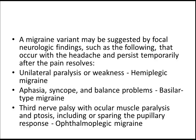Migraine variants may be suggested by focal neurological findings that occur with the headache and persist temporarily after the pain resolves. These include: unilateral paralysis or weakness — hemiplegic migraine; aphasia, syncope, and balance problems — basilar-type migraine; and third nerve palsy with ocular muscle paralysis and ptosis, including or sparing the pupillary response — ophthalmoplegic migraine.